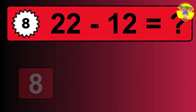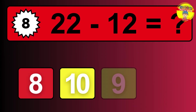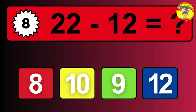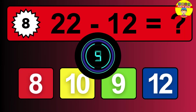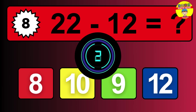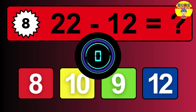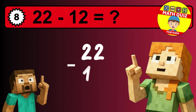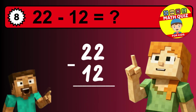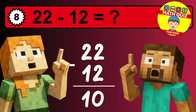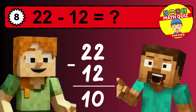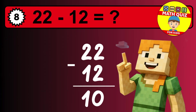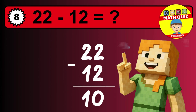What is 22 minus 12? Time to think. Let's solve this step by step. We start with the units: 2 minus 2 is 0. Then we go to the tens: 2 minus 1 is 1. The final answer is 10.